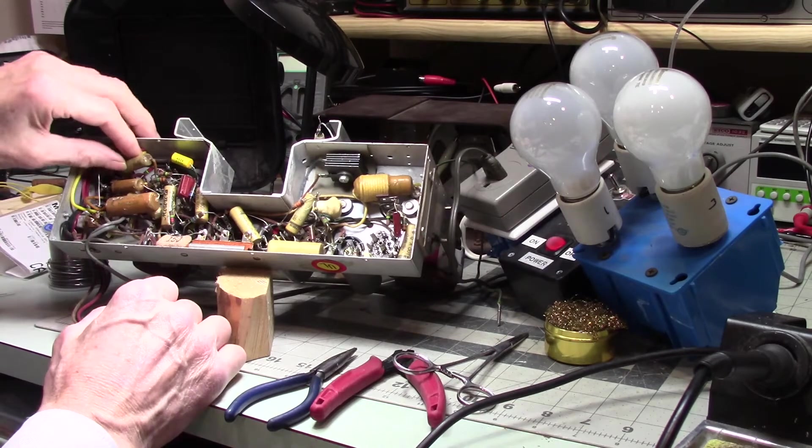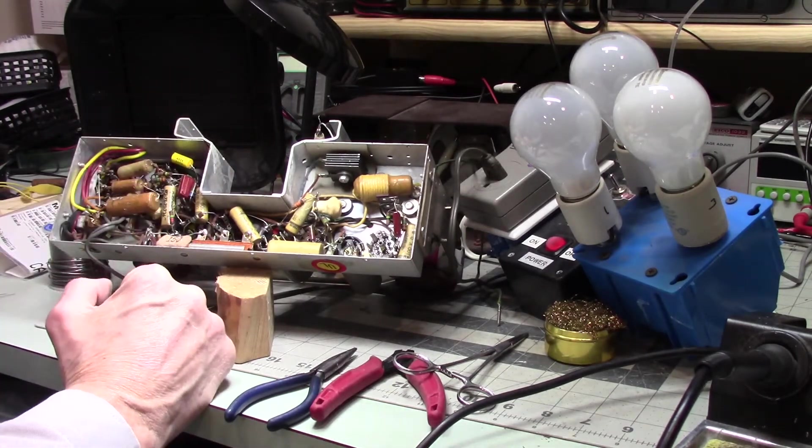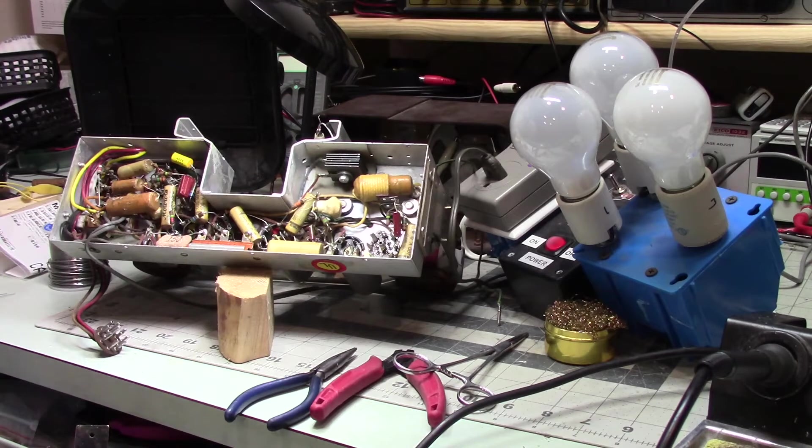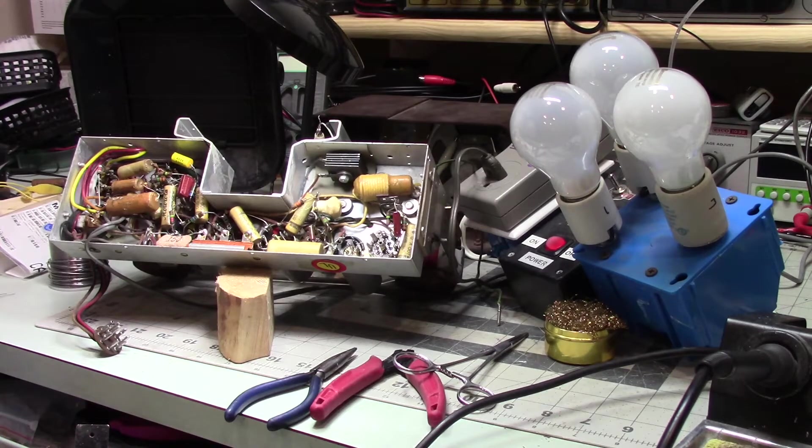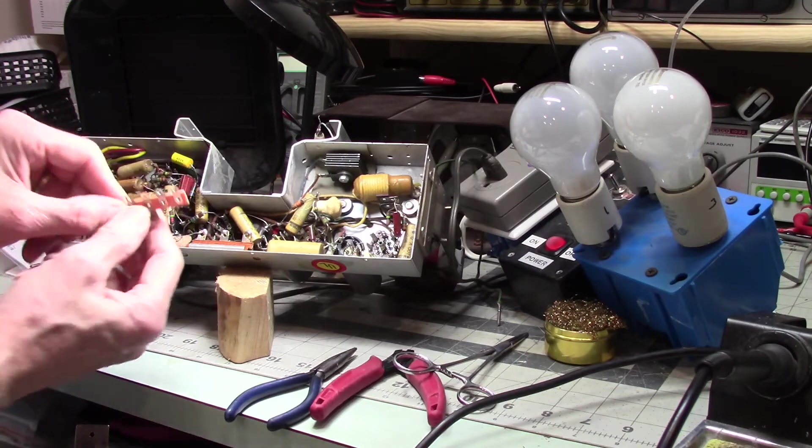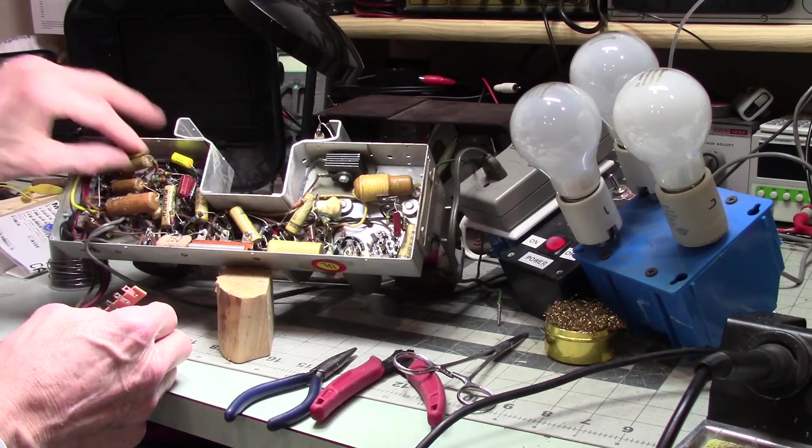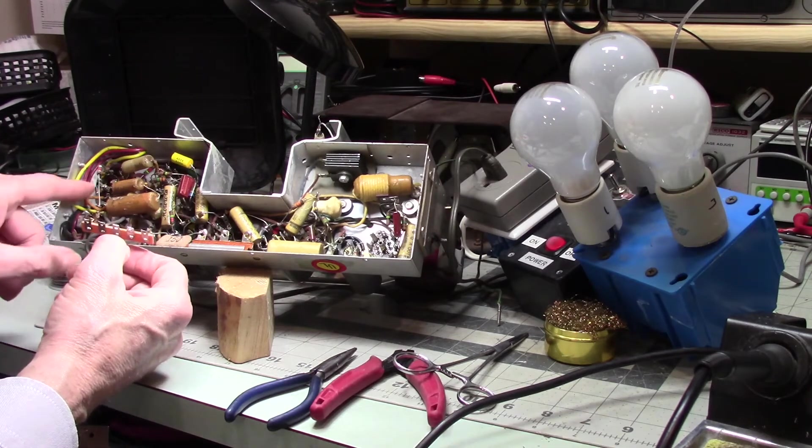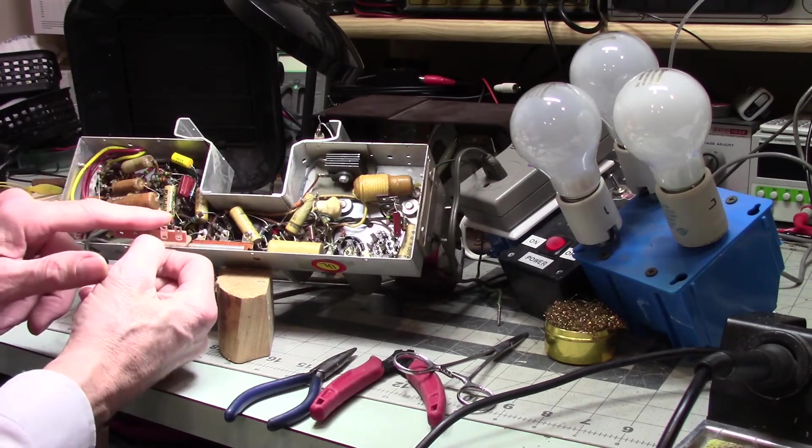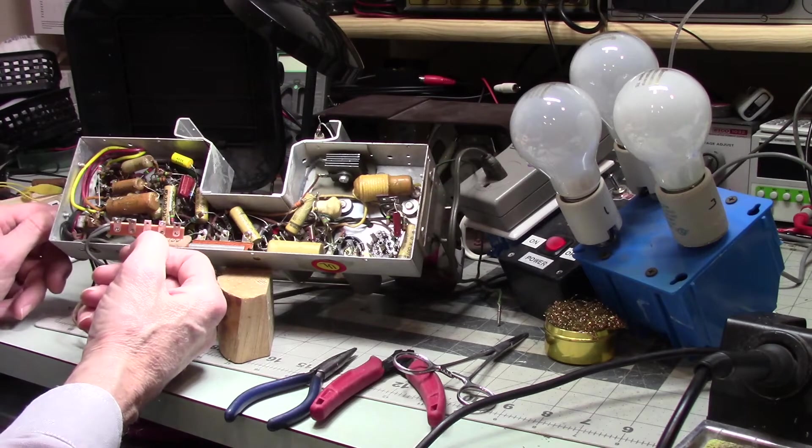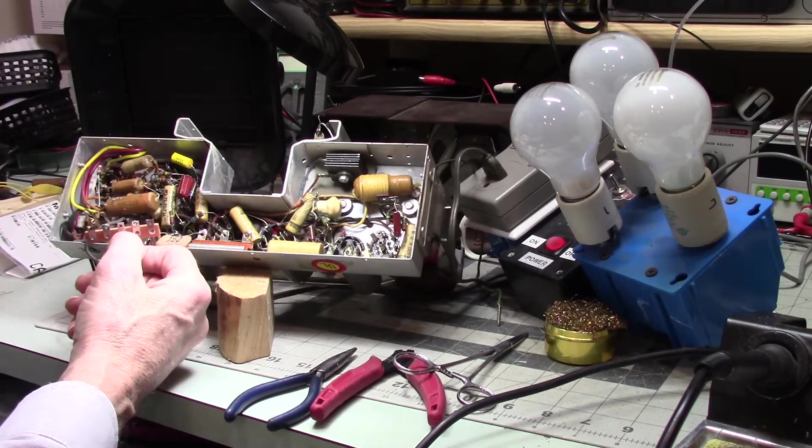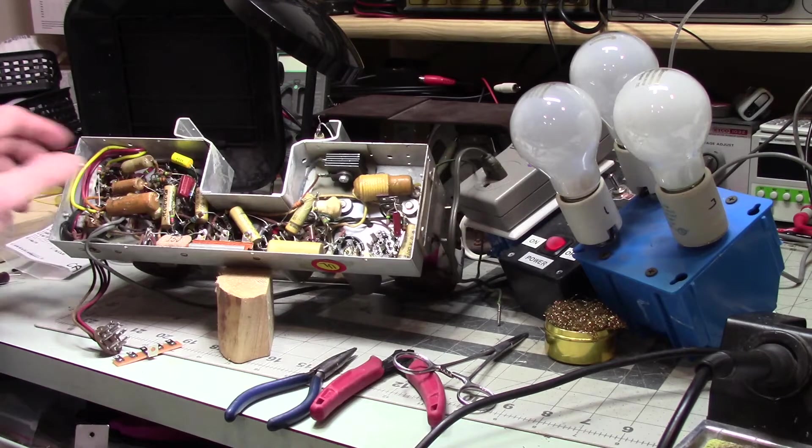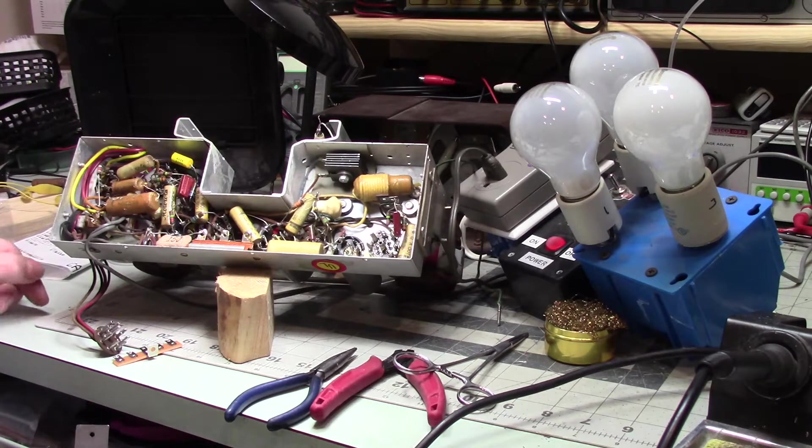Well, the last time I did this, I took a terminal strip, straighten the leg out, took the terminal strip, straightened this leg out straight, and soldered it to the common ground on the old electrolytic, and then that gave me the ability to attach the new capacitors and the new wiring to this. So I think that's what I'm going to try to do again.